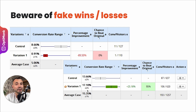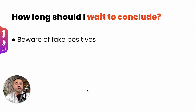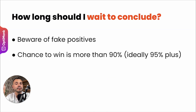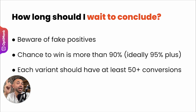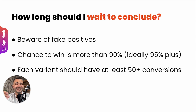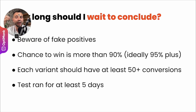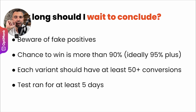To avoid fake wins and losses, you definitely have to wait until your chance to win is more than 90%, but ideally more than 95%. Each variant should have at least 50+ conversions — if you only have 10 or 20 per variant, there's a huge chance you're concluding too early. And you have to run your test for at least a couple of days. Concluding in one day risks a fake positive or negative.